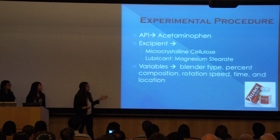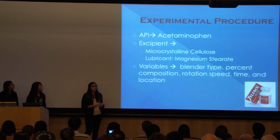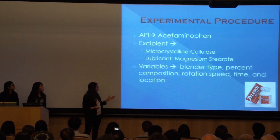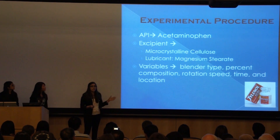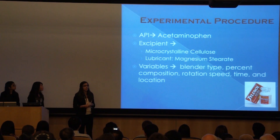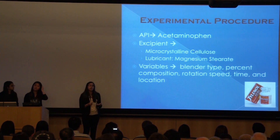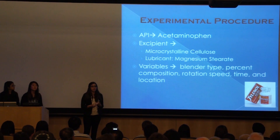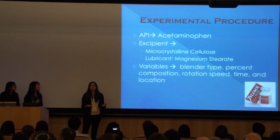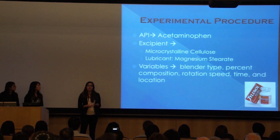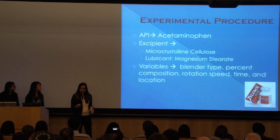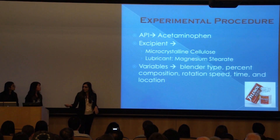In our experiment, in order to determine the most optimal blending process, we set different variables to determine which one actually affects blend homogeneity the most. We used two different types of blenders, varied the percentage of compositions, different RPM or rotation speeds, the amount of time, and we took samples from different locations within the blender.